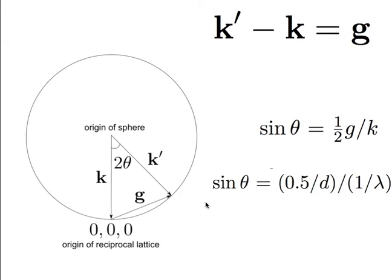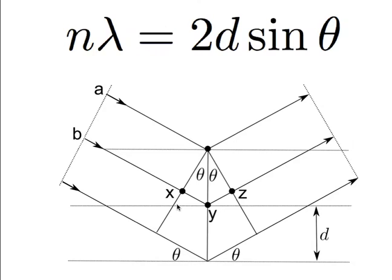The Ewald sphere is simply a vector representation of the Bragg law. k here represents the incident beam going towards your crystal — it is heading towards the origin of reciprocal space — and the magnitude of k is 1 upon the wavelength. k' is the diffracted beam and the angle between the incident beam and diffracted beam is always 2 theta according to the Bragg law.